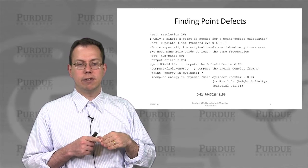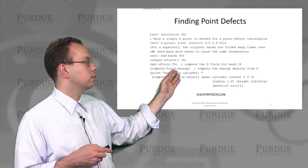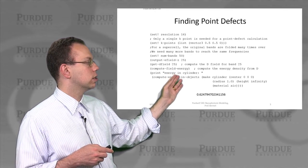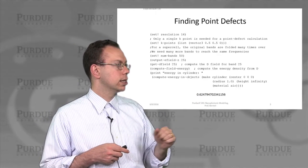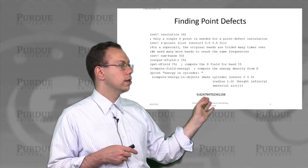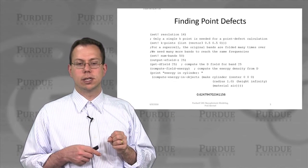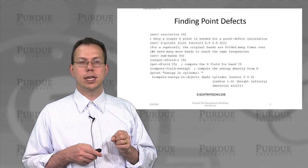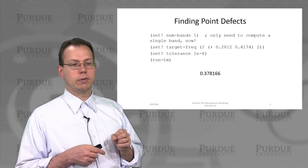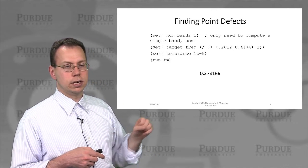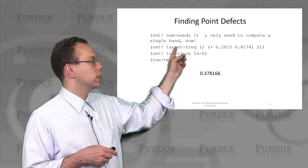We want to output the E field specifically for that defect, and also figure out how much energy is associated with it. We compute the energy in the object using a defined function, and it turns out that almost two-thirds of the energy is contained within the air defect cylinder for the defect mode.